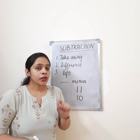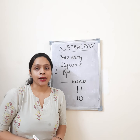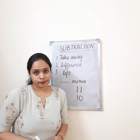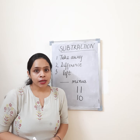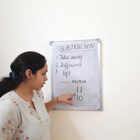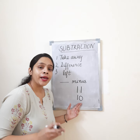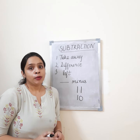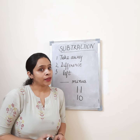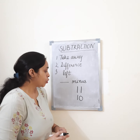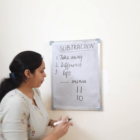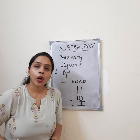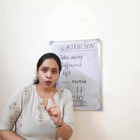Now tell me, for my little son, how many story books are left in my bag? How many story books are left? 11 was the total number of story books. 10 my elder daughter took away. Now how many books are left for my younger son? 11 minus 10 is equal to 1. So my little son is left with 1 book.